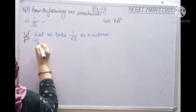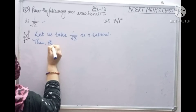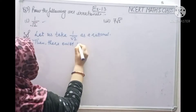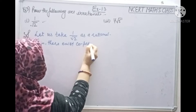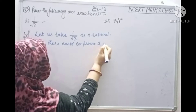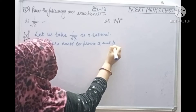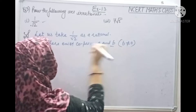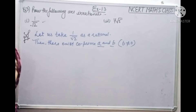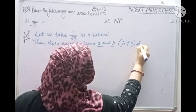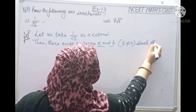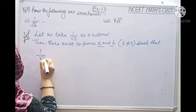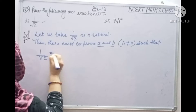Then there exists co-prime A and B, where B is not equal to 0, such that 1 by root 2 is equal to A by B.